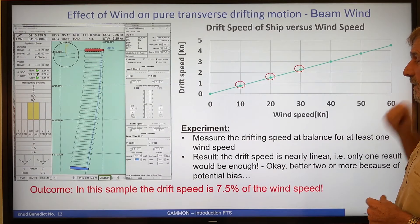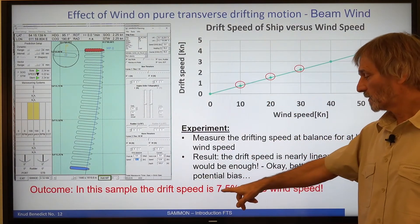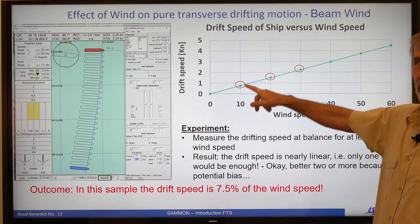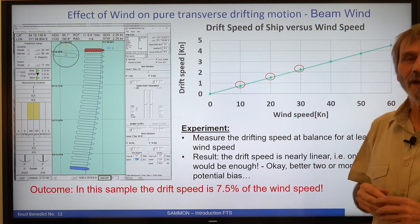So in this case, in this sample, the drift speed is 7.5% of the wind speed. For 10 knots of wind, we arrive with 0.75. So it's 7.5%.